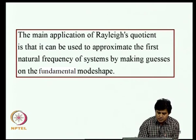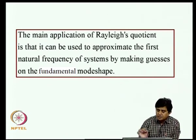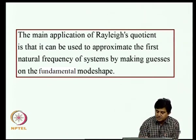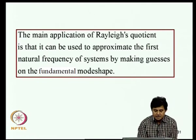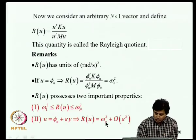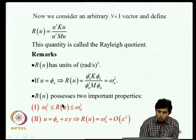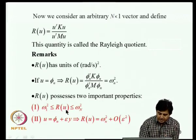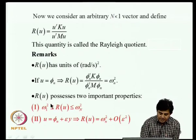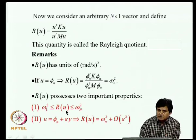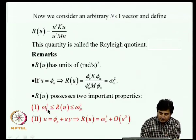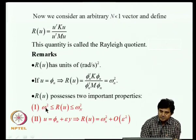The main application of Rayleigh's quotient is to approximate the first natural frequency by making guesses on the first mode shape. If the objective is to estimate the first natural frequency, one makes a guess on the first mode shape, substitutes it into R(U), and obtains an estimate for the first natural frequency squared.